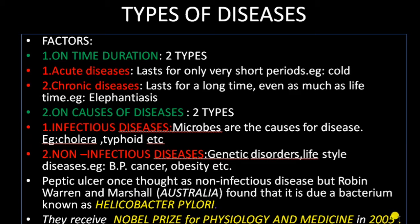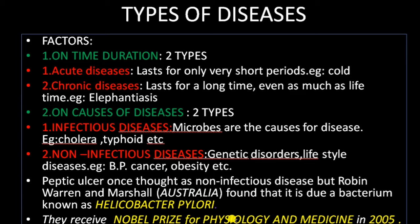For this finding, they received the Nobel Prize in physiology and medicine in 2005. For DSA and audit examinations, you have to remember: peptic ulcer is caused by the bacterium Helicobacter pylori, discovered by Robin Warren and Marshall Barry Marshall, scientists from Australia. You can get four questions from this: the bacteria causing peptic ulcer, the scientists who discovered it, when they got the Nobel Prize, and in which branch of science they received it.